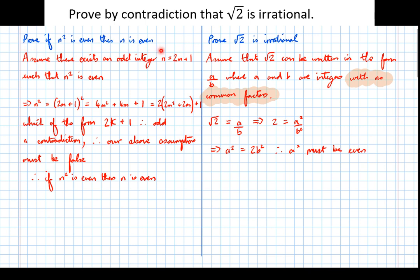This is where the bit of work we did across here came in, because if a squared number is even then the number before it was squared must be even. So that's where this part of the proof comes in, so therefore a must be even.